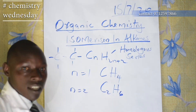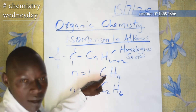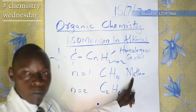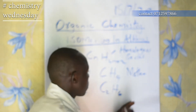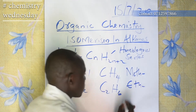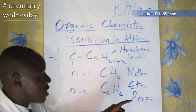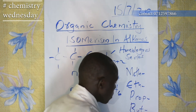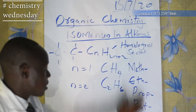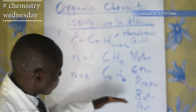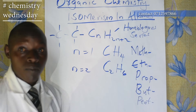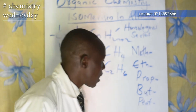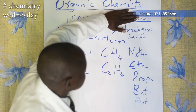In our discussion on nomenclature, we said that the first member CH4 is called methane — meth is the prefix for n equals 1. For n equals 2, the prefix is eth; n equals 3, the prefix is prop, so we have propane; then butane, pentane, etc. We looked at the first 10 members of this series up to decane. From number 5 onwards, it follows the naming of polygons done in mathematics — pentagon, hexagon, heptagon, octagon, and so on. All are alkanes, and the suffix is -ane.